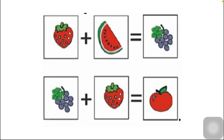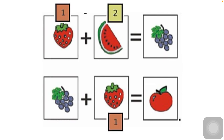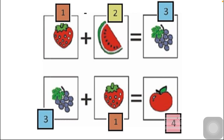First, we assume strawberry equals one, since strawberry appears in both equations and we take the smallest possible number. The next smallest is two for watermelon. So one plus two equals three — grapes equals three. Then three plus one equals four — apple equals four. These numbers satisfy both equations exactly.